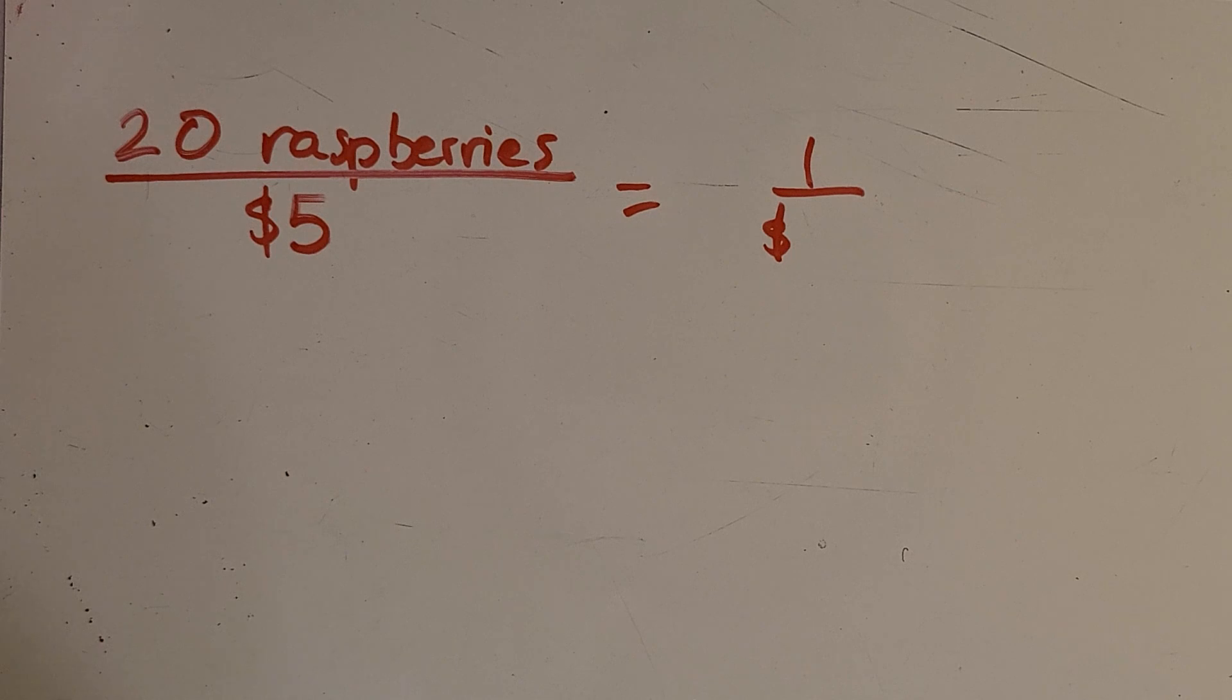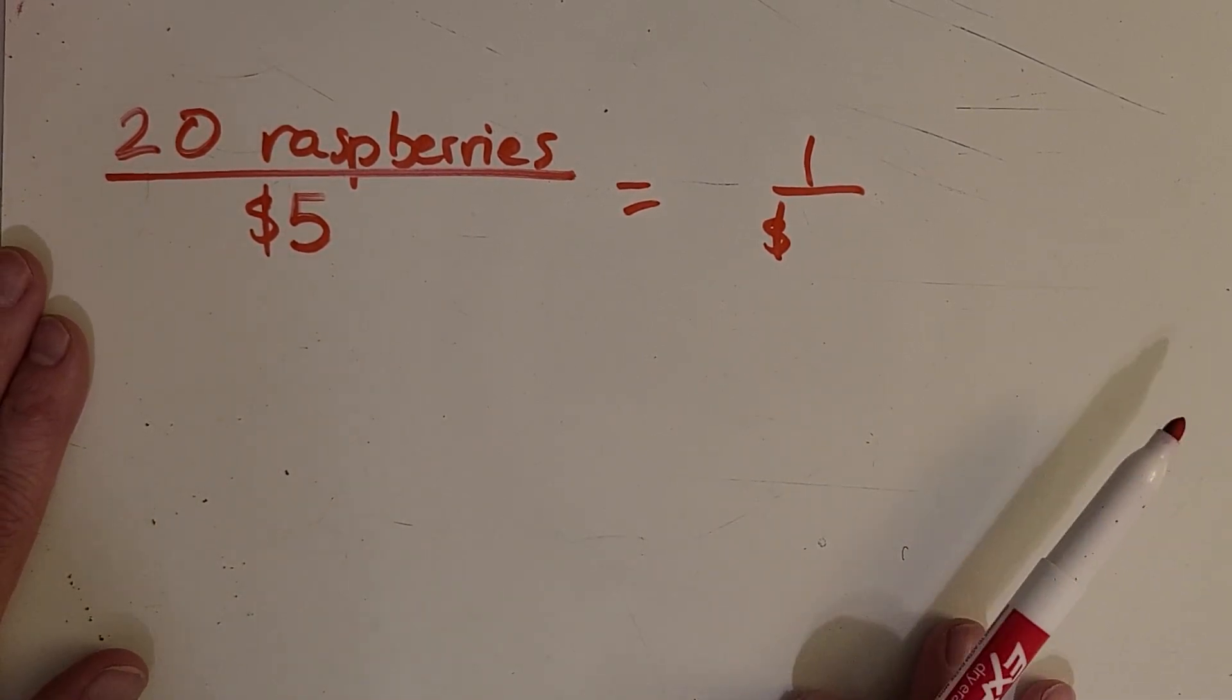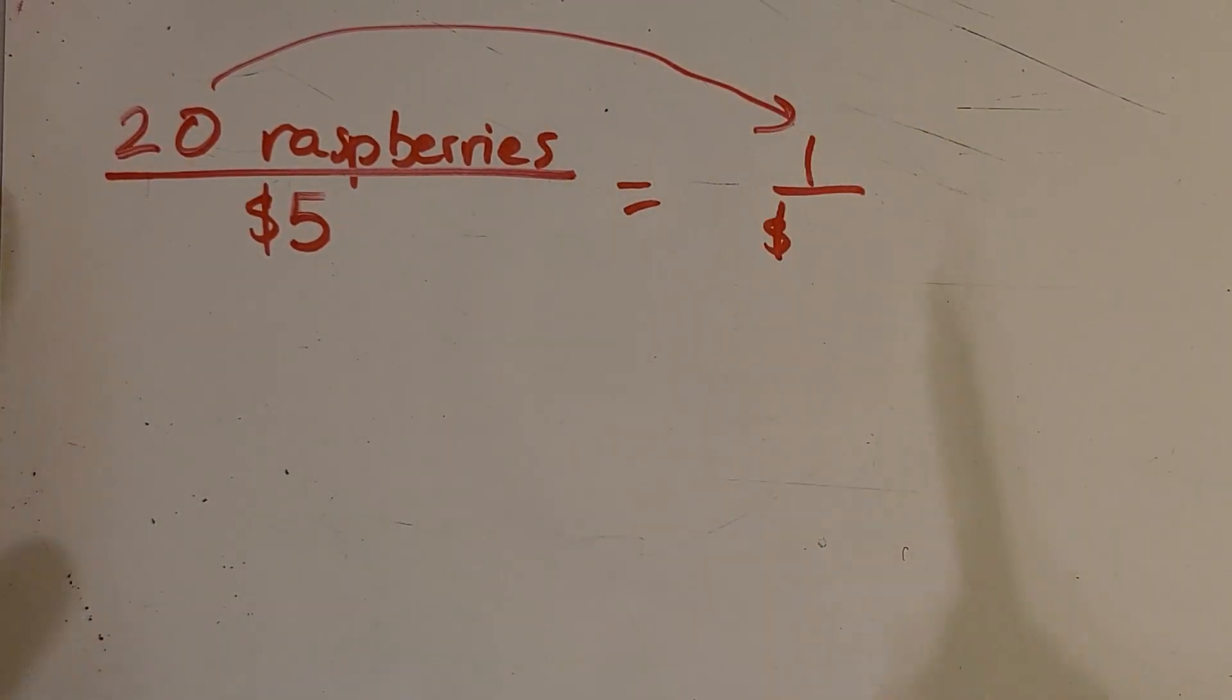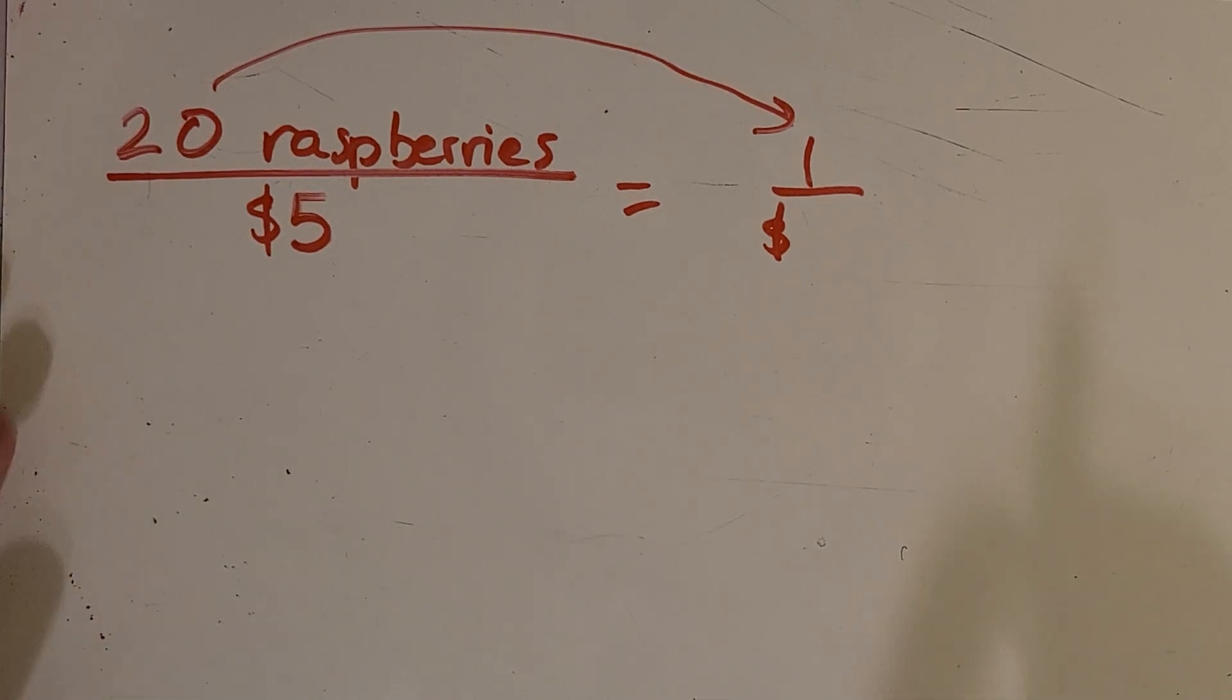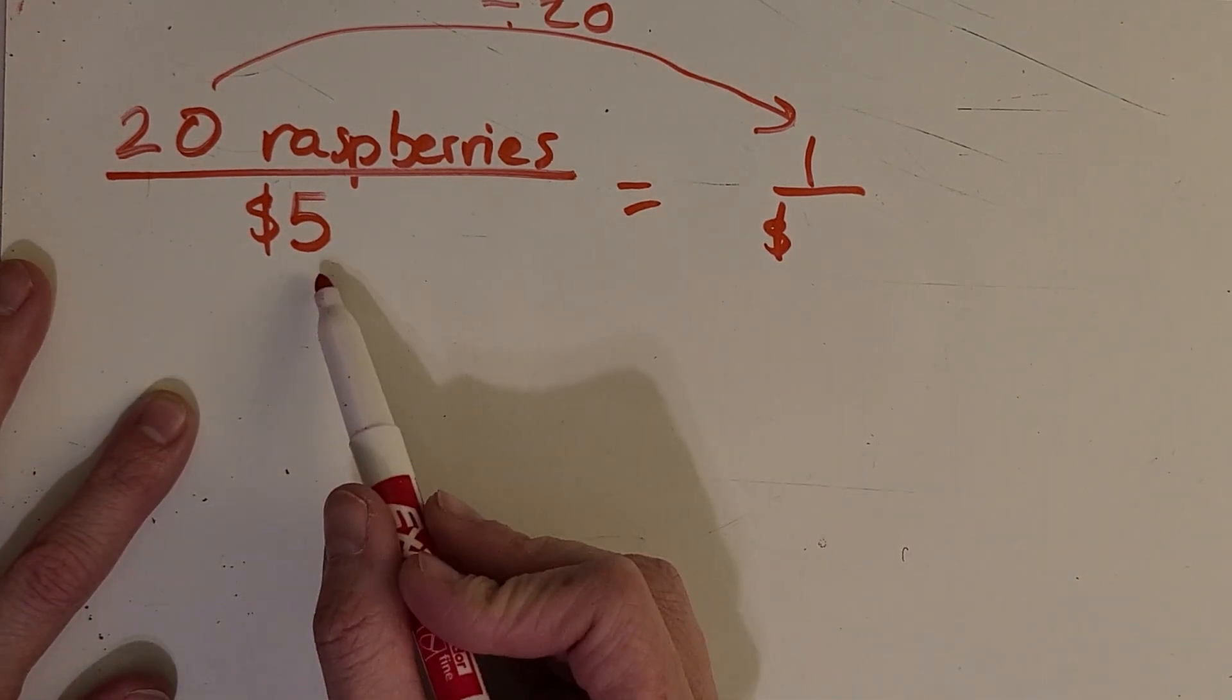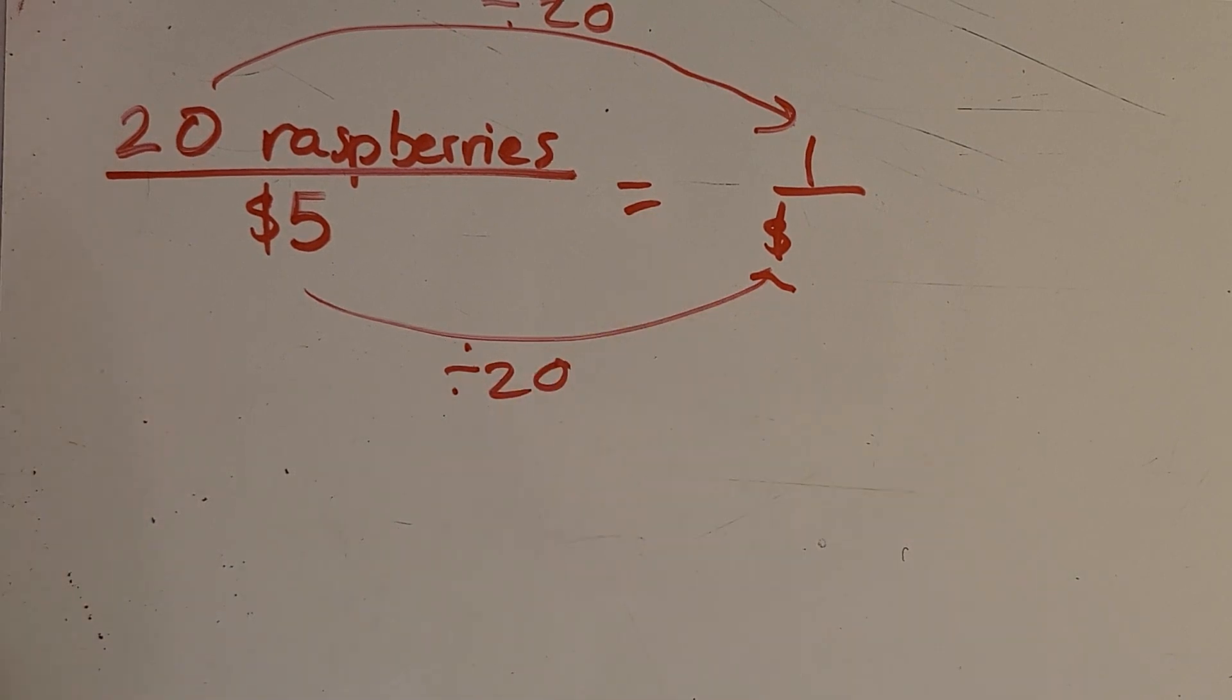Okay, so now what we can do is look for any sort of pattern that you see, just like we did with the last problems. So how do I get from 20 down to 1? Yeah, I divide by 20. So I could do that to this part right here, right? Does anyone see another pattern going on that we could use to help us out?